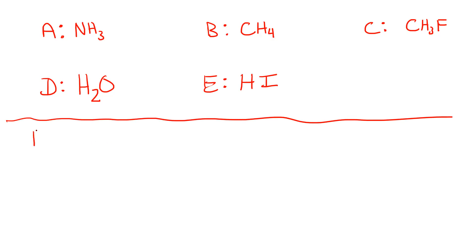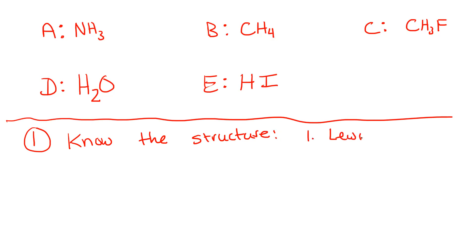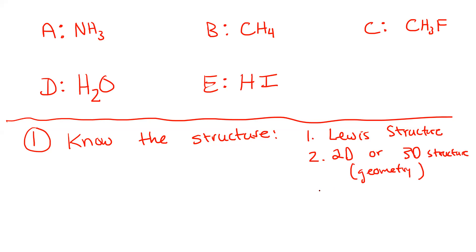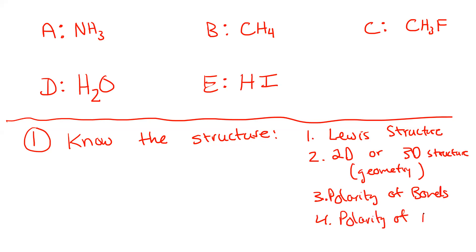There are a number of things we need to do here. First, we need to acknowledge that we need to know the structure, which will require a Lewis structure. That will also require a 2D or 3D structure — we have to consider the geometry. Then we have to look at the polarity of the bonds, and finally, the polarity of the molecules.